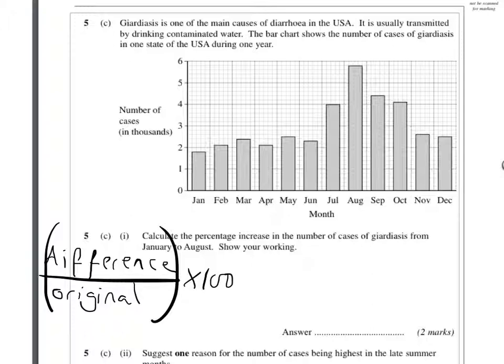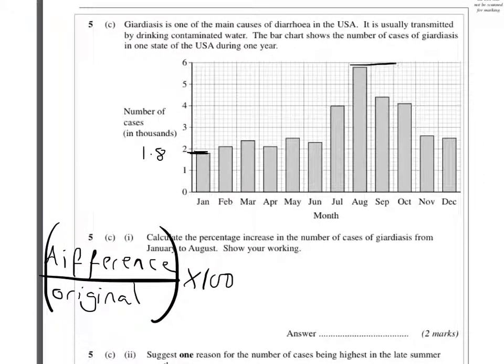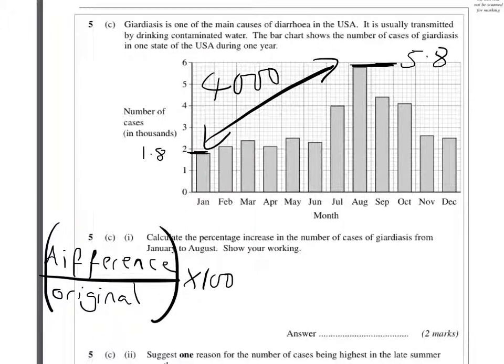So what are we interested in? We're interested in the difference to begin with, and that is going to be here: 1.8 thousand in January suffered, going up to here, 5.8 thousand sufferers in August. So that's the difference, 4 thousand sufferers. So that's 4,000 is the difference.